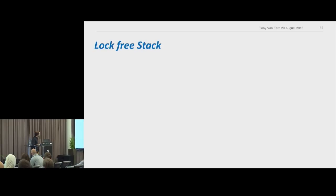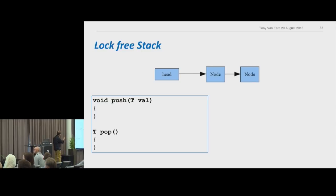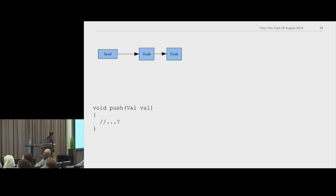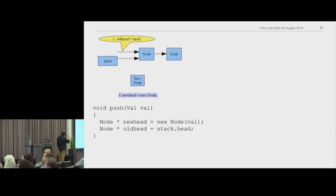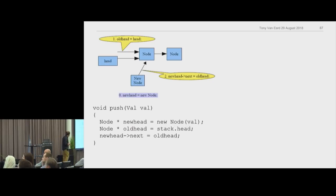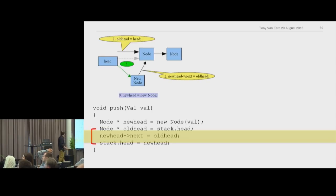Let's do something with this lock-free stuff — let's make a lock-free stack, the simplest thing you could do. A lock-free stack has a head that points to a bunch of nodes, and we just need to write push and pop. For push, we allocate a new node, look at what the old head was, set up the new node to point to the old head, and update the stack head. Of course, we have a problem.